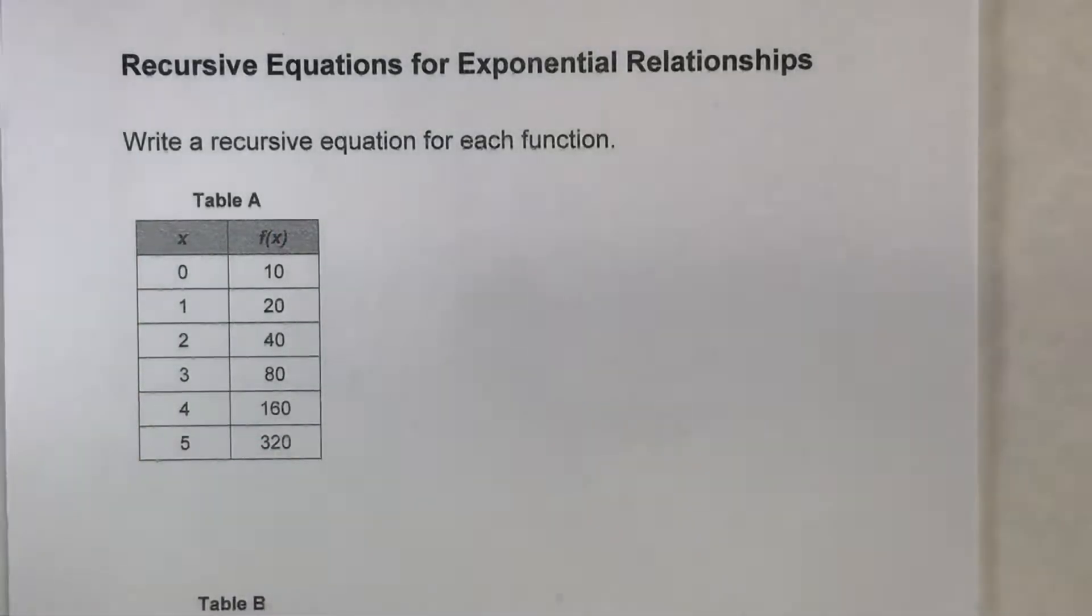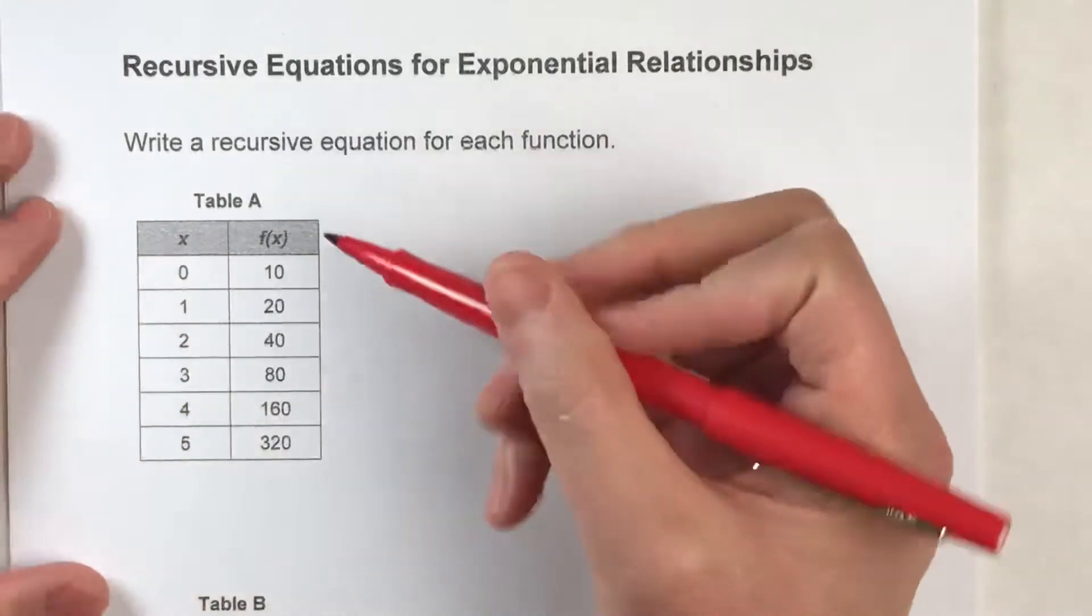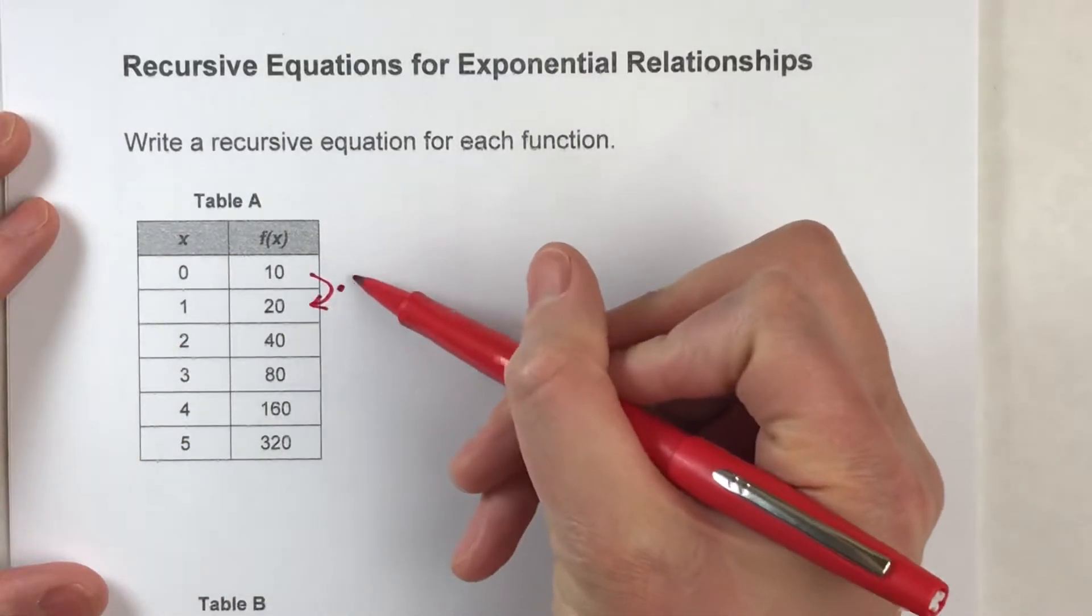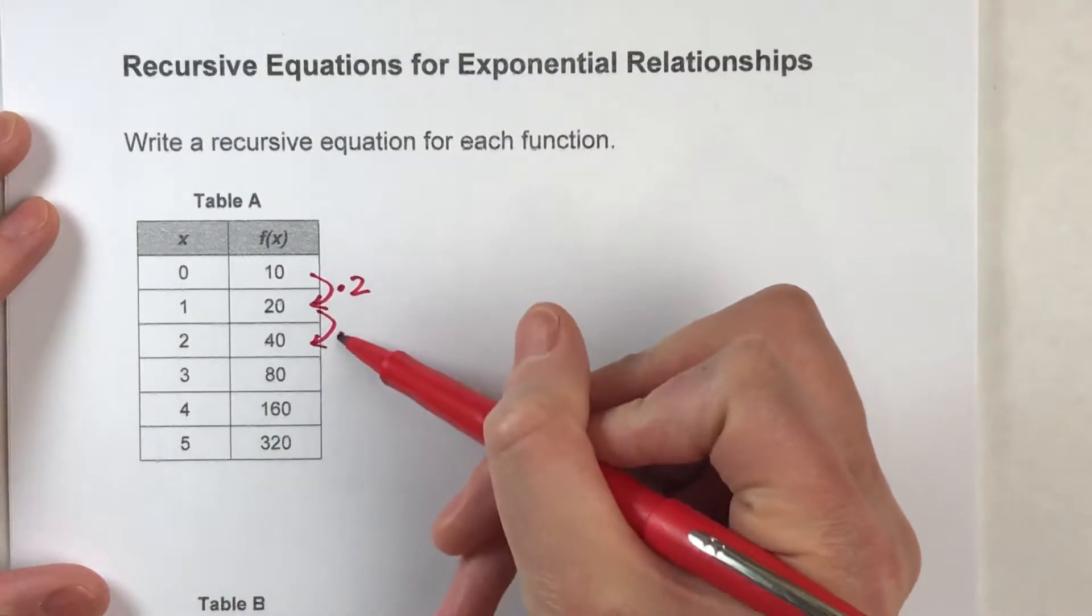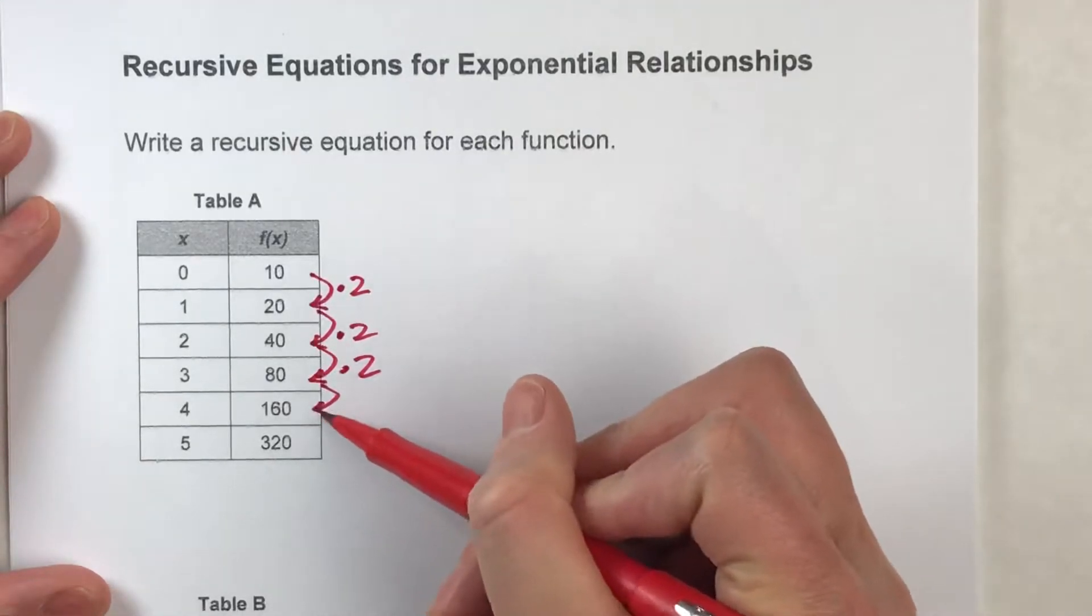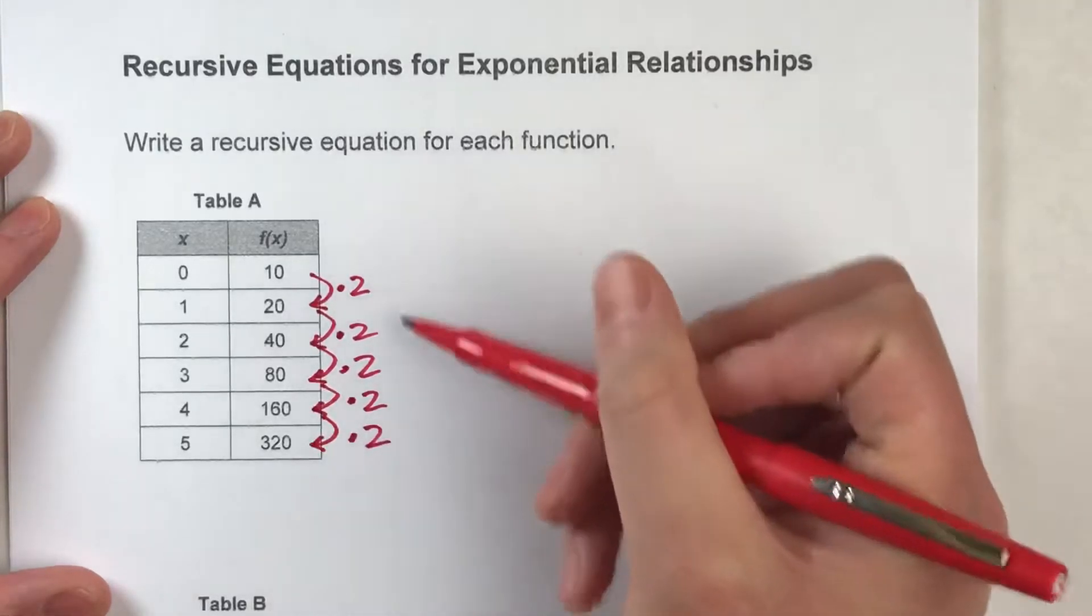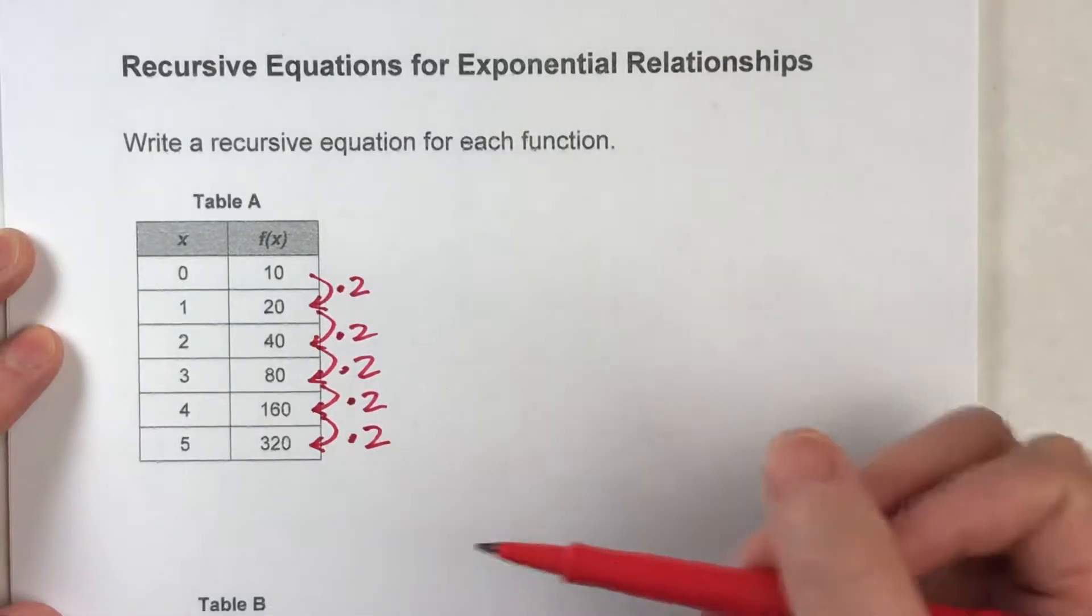So table A, notice in this table, x is increasing by one, and here's f of x, and if you really study this pattern carefully, notice it's repeatedly multiplying by two every single time. So we know that this is an exponential relationship because of the repeated multiplication in here.